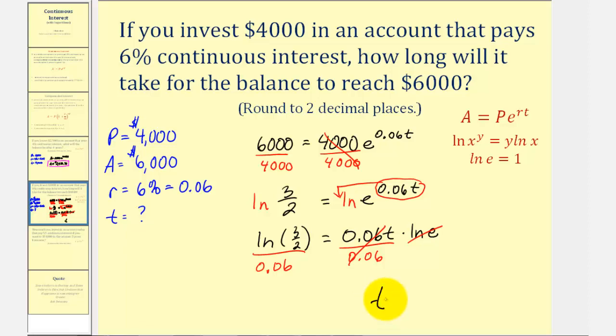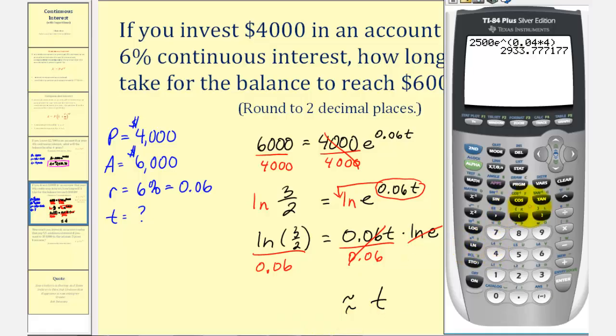So we have T is going to be approximately equal to this quotient here. And now we'll go back to the calculator, and it says round to two decimal places. So we have natural log three-halves.